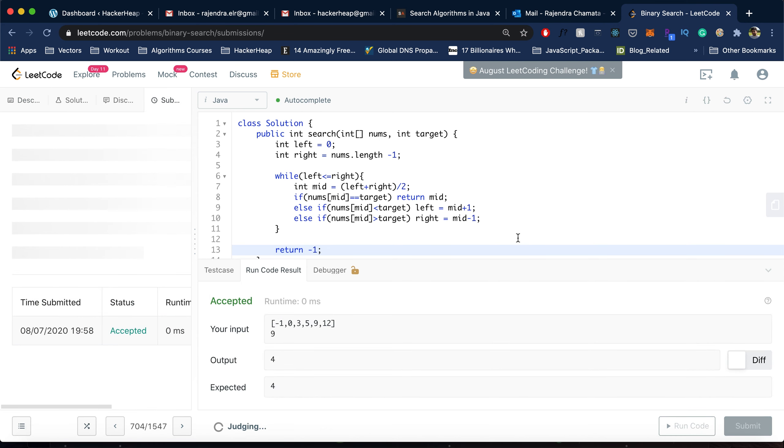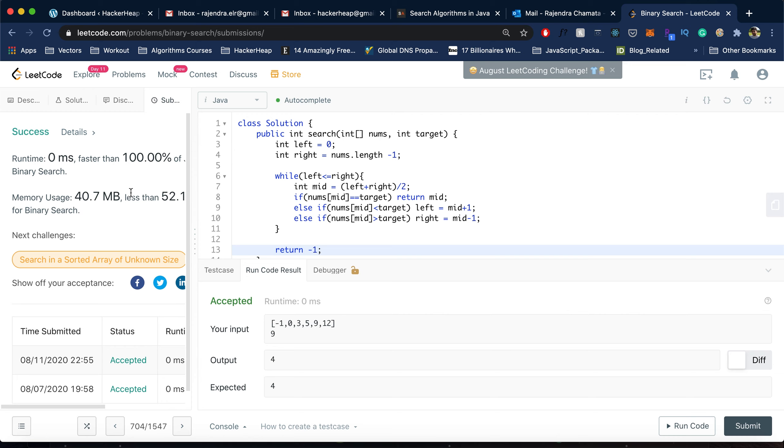There is one edge case scenario. When the left and right becomes equal and if the array is so large the integer can hold, let's say if the left and right index are 2 power 31, which is the highest number in the index.